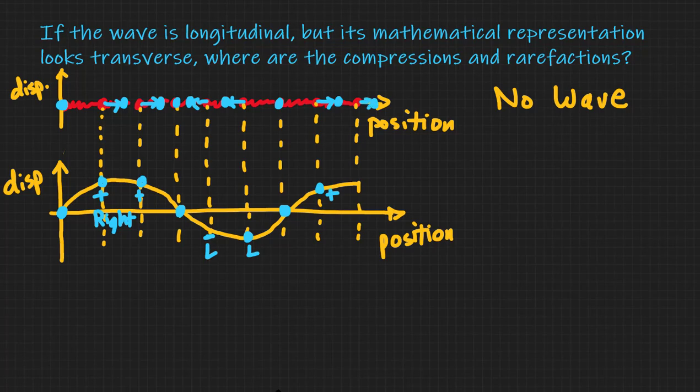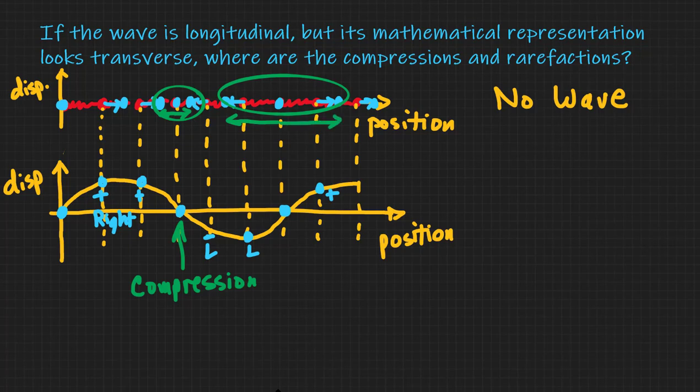So now what we want to notice here is, if we look right here, we can see the beads are very close together. This here represents a compression. Beads are close together. You can see there's not much spread in the beads. Whereas right here, you can see that the beads are far apart. So this here would represent a rarefaction.